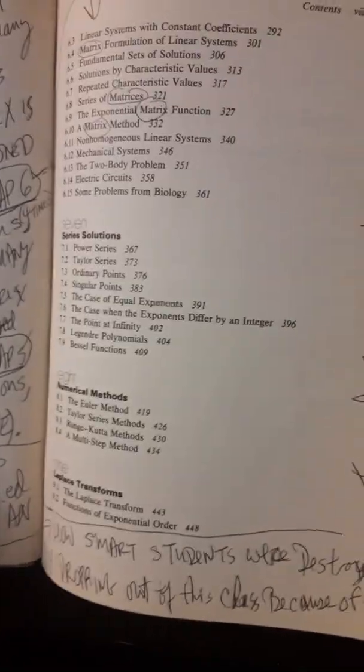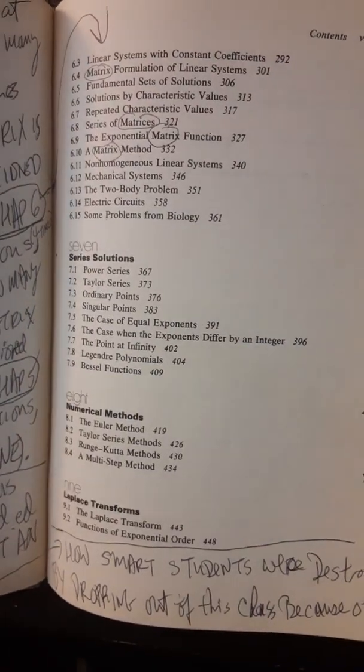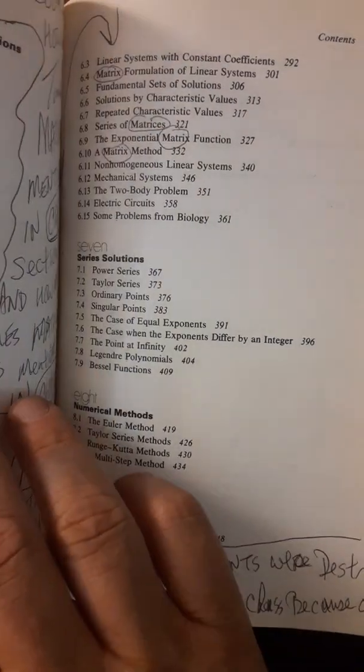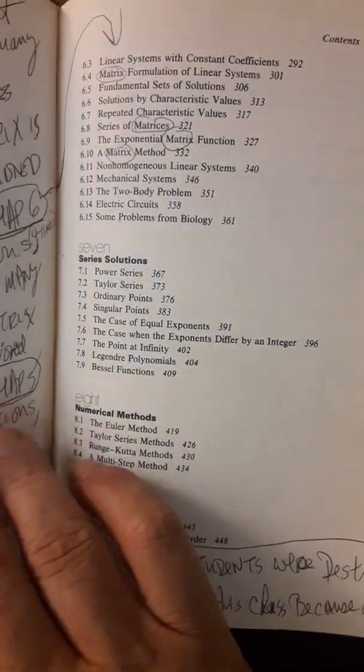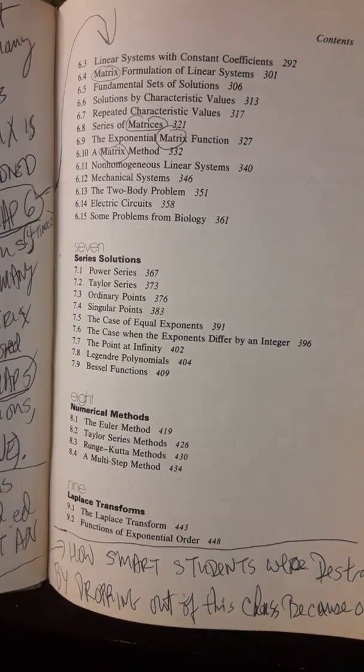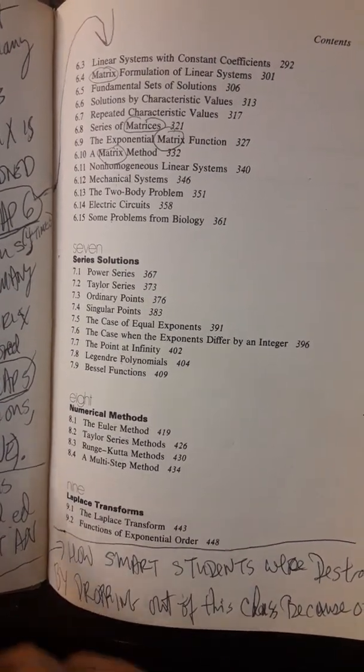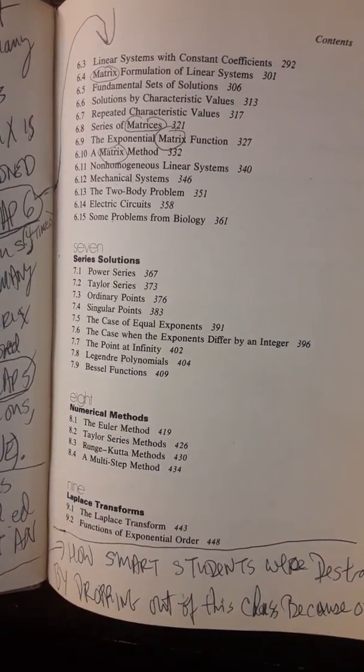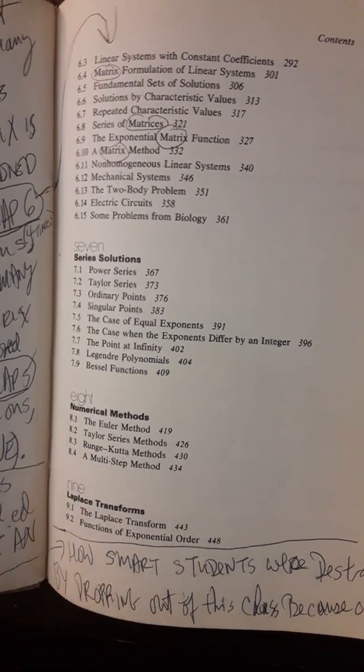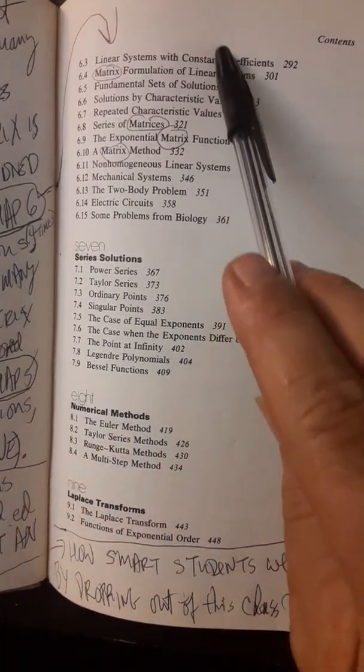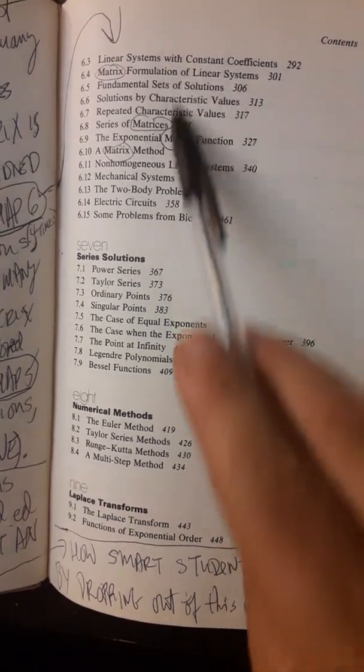In fact, the first time that we see matrices mentioned is over here in chapter six. So remember, two, three, and four were no differential equations, then we had some differential equations in five, and finally in six.